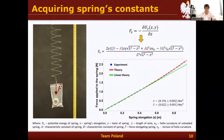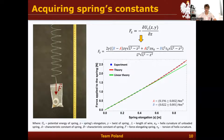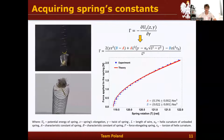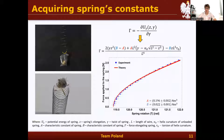In the first experiment, we hung different weights on a helical spring and measured its elongation. As you can see on the graph, the spring's elongation depends in a nonlinear way on the force applied. In the second experiment, we also applied force to a spring but this time measured spring rotation. Knowing the spring rotation and elongation when force is applied, we are able to find the values of parameters A and B that describe the spring.